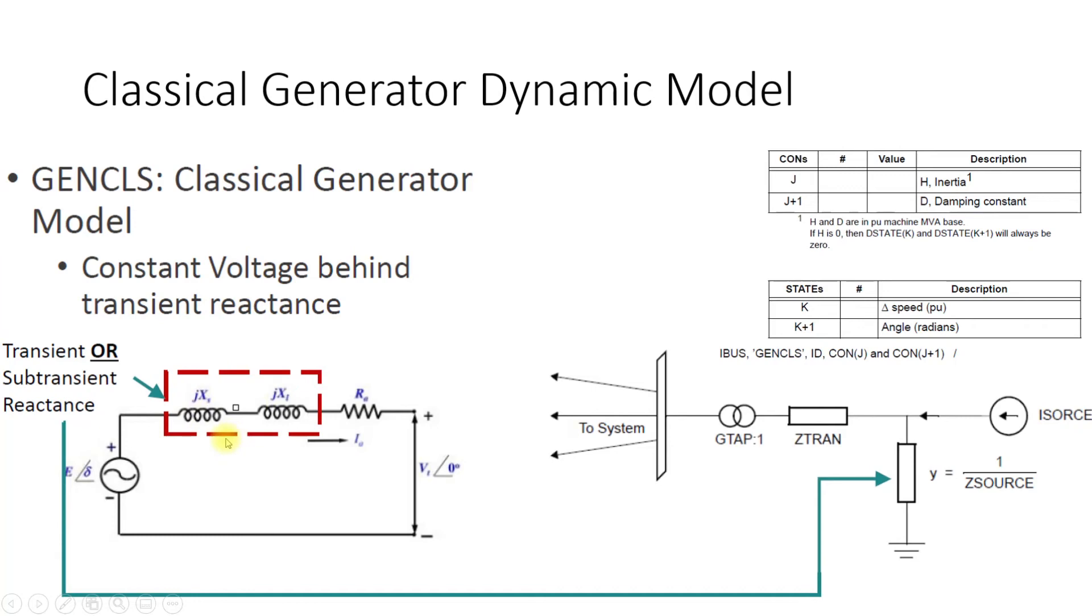We are going to provide some kind of transient reactance. Whatever the value of transient reactance we have provided in our load flow analysis will be used behind a constant voltage source, a type of voltage source which is not going to change irrespective of what is happening on the other side.